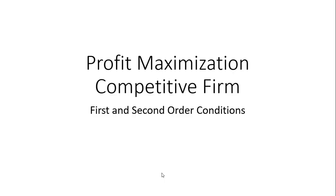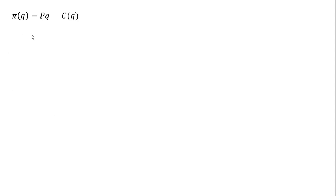In this video we're going to look at the first and second order conditions that are necessary for a competitive firm to maximize profit. We're going to start with a profit function. A competitive firm's profit is a function of Q quantity, which equals total revenue — price times quantity — minus total cost, where C is total cost and that is a function of quantity.